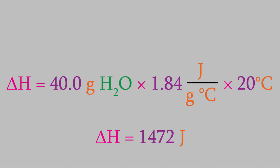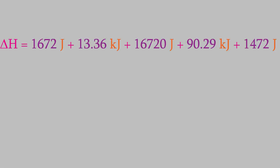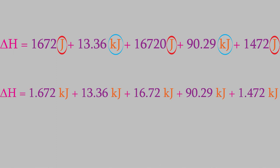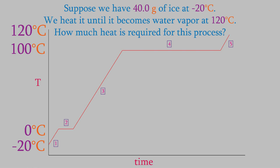So now, all we have to do is add together the enthalpies of all five steps. But be careful! Notice that we calculated steps 1, 3, and 5 in joules, but steps 2 and 4 are in kilojoules. We need to make sure all of them are the same unit before we add them. I'll go ahead and convert steps 1, 3, and 5 into kilojoules. Now that we did that, we'll add them together and find out that the total enthalpy is 123.51 kilojoules. So, that's how much heat we have to add in order to make our ice go from negative 20 degrees Celsius all the way to water vapor at 120 Celsius.